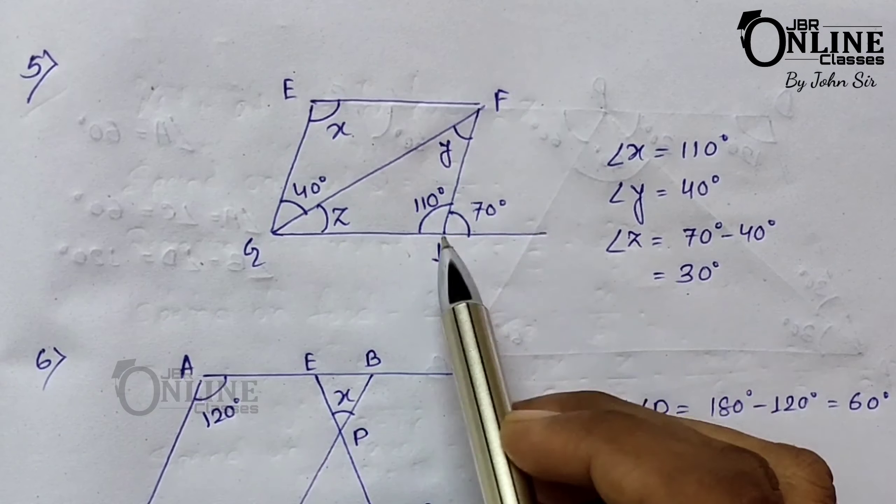Number five: EFGH is a parallelogram. Find X, Y, and Z. The given exterior angle is 70 degrees. Since AGH is a straight line, the full angle equals 180 degrees, so the inner angle equals 180 − 70 = 110 degrees. Angle X is the opposite angle to this, so angle X equals 110 degrees. Since angle Y is the alternate angle to the given 40-degree angle, Y equals 40 degrees.